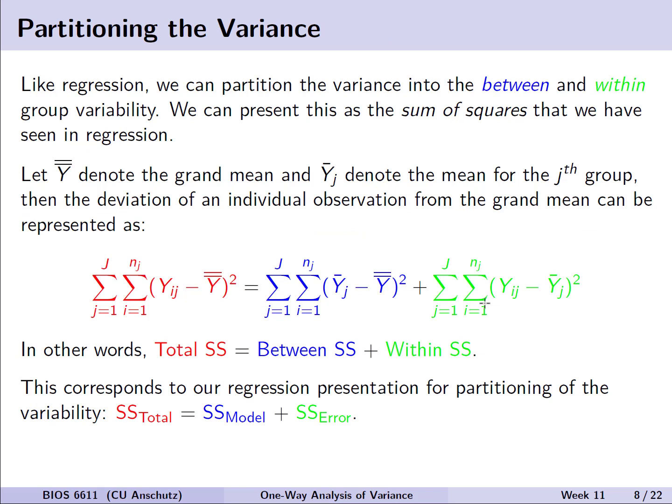One thing we can note, drawing a direct connection to our previous discussion of partitioning the variance in regression, is that we can divide up the sums of squares here as well, with slightly different terminology. We have between and within group variability. The total sums of squares is partitioned into a between and a within component, where y double-bar is the grand mean, y-bar_j is the group-specific sample mean, and y_ij is each individually observed value. This corresponds to the regression framework where we had sums of squares model instead of between, and sums of squares error instead of within.